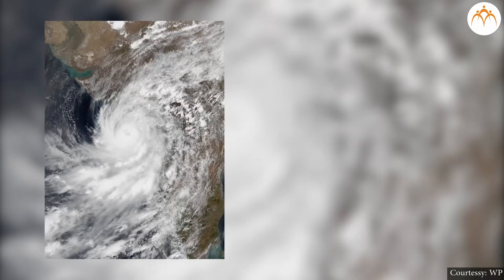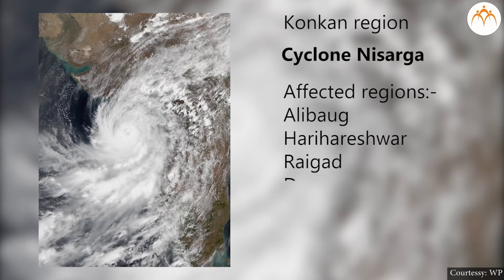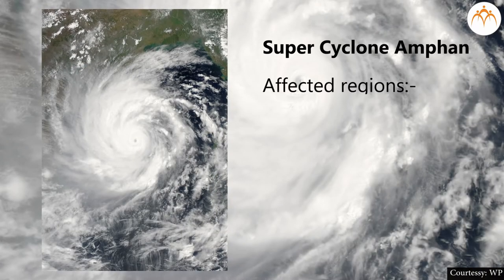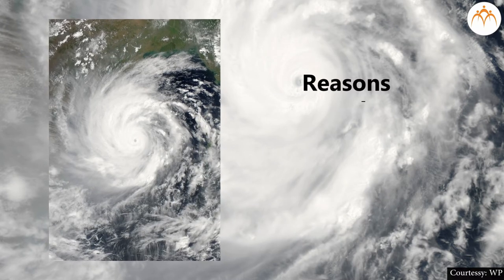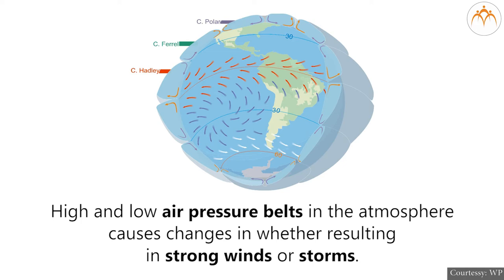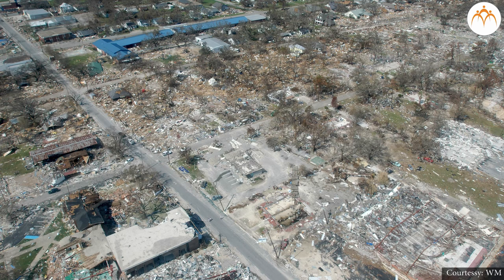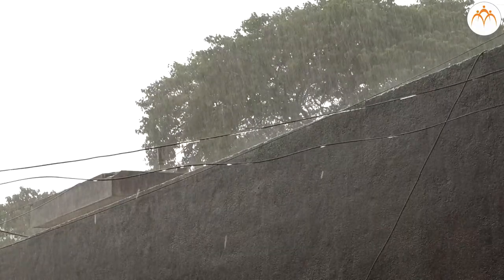Have you heard about storms? Recently, in the Konkan region, there was a severe cyclone named Nisarga, which affected Alibag, areas between Harihareshwar in Raigad, Daman, Mumbai, Thane, and Palghar. Cyclone Nisarga came weeks after super cyclone Amphan hit West Bengal, Odisha, and Bangladesh. It is interesting to know that the name of this cyclone was proposed by Bangladesh. When there is a formation of high and low air pressure belts in the atmosphere, it causes changes in weather resulting in strong winds or storms. Storms and cyclones cause great damage in terms of loss of life and property, disruption of electric supply, and disruption of transport and communication. Heavy rain from storms also disrupts human activity and damages crops.